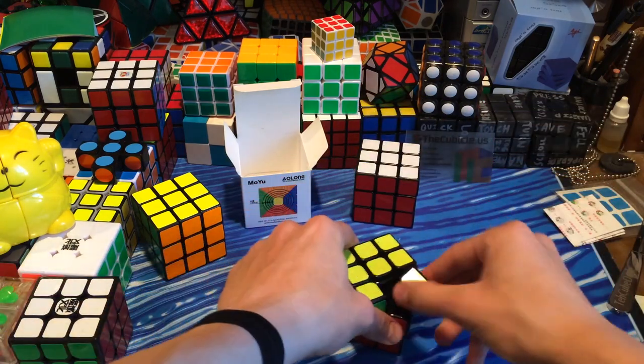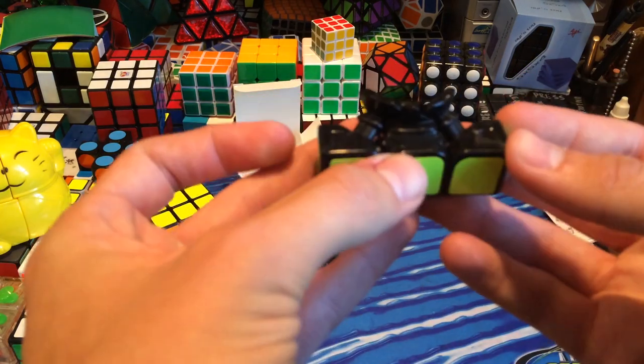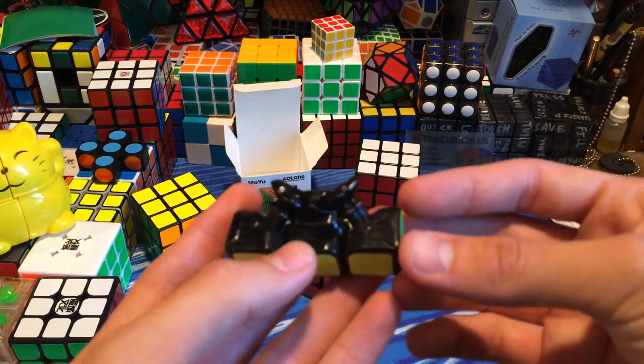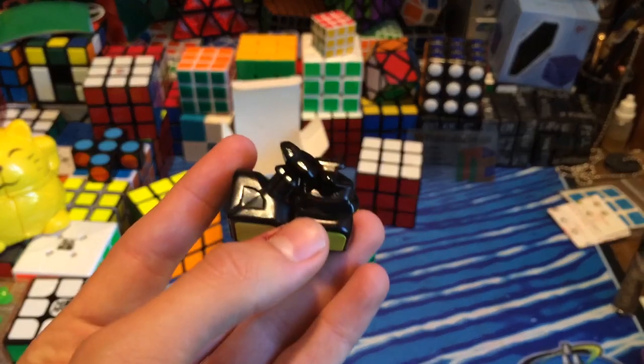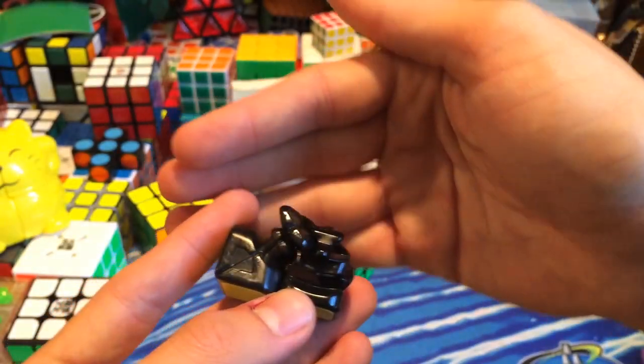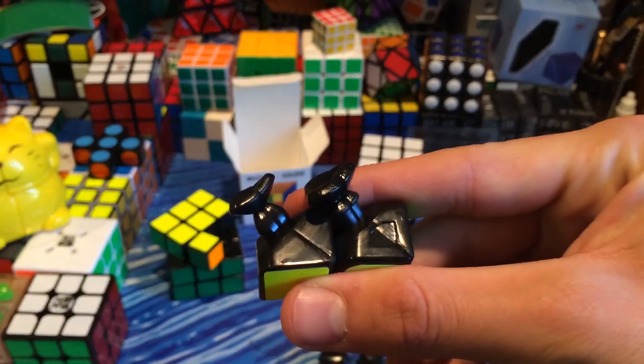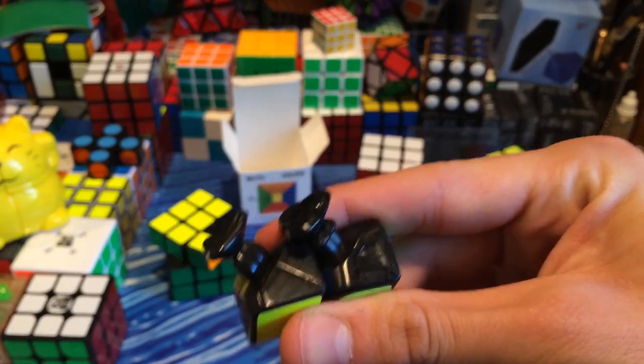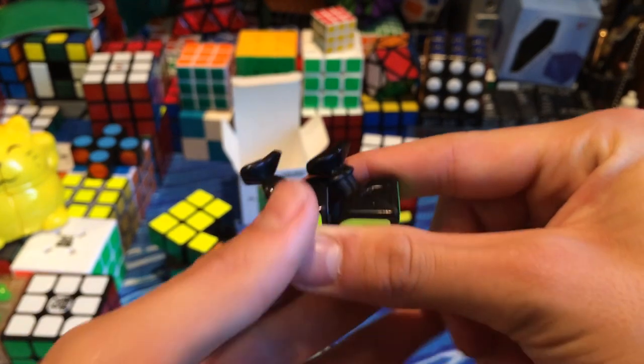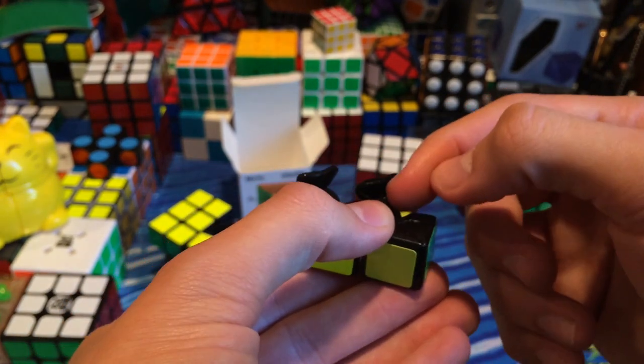Let's take a look at the pieces. So here we see the edge and the corners. This is how they fit together. Here with me I have a Weilong corner on the left and an Aolong corner on the right. And as you can see the Aolong corner has an extra little thing right there on the stalk.